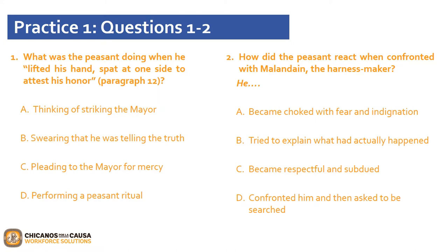Now that we are at Practice 1, let's go over the following questions. Question 1 asks: what was the peasant doing when he lifted his hands but at one side to attest his honor, paragraph 12? Is it A, thinking of striking the mayor? B, swearing that he was telling the truth? C, pleading to the mayor for mercy? Or D, performing a peasant ritual? If you chose B, swearing that he was telling the truth, that is the correct answer.